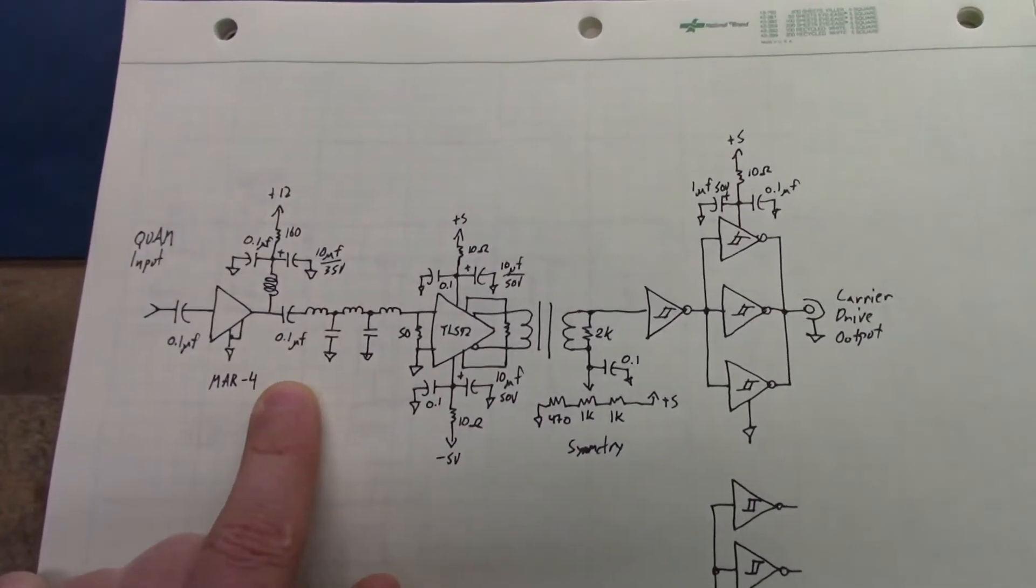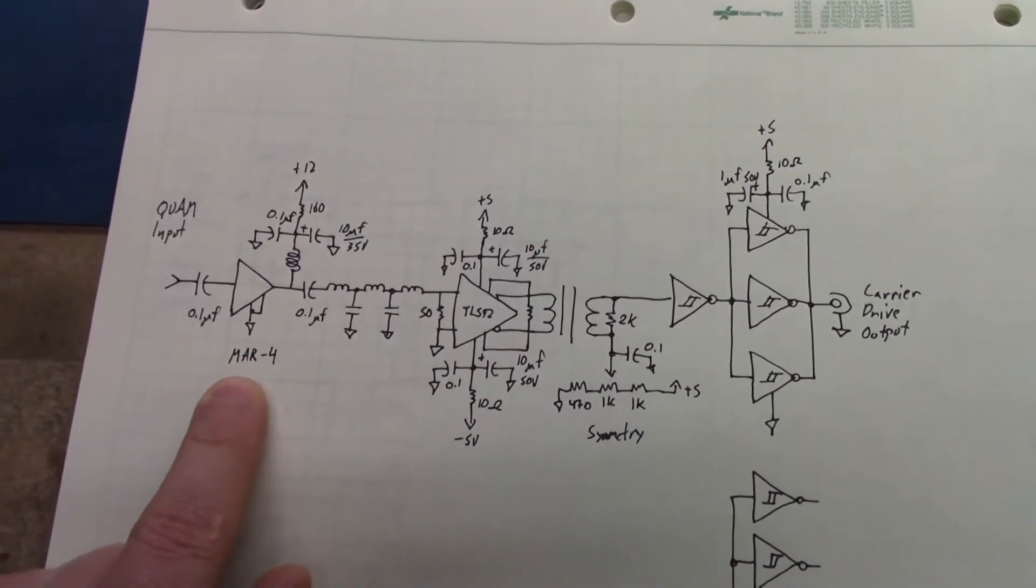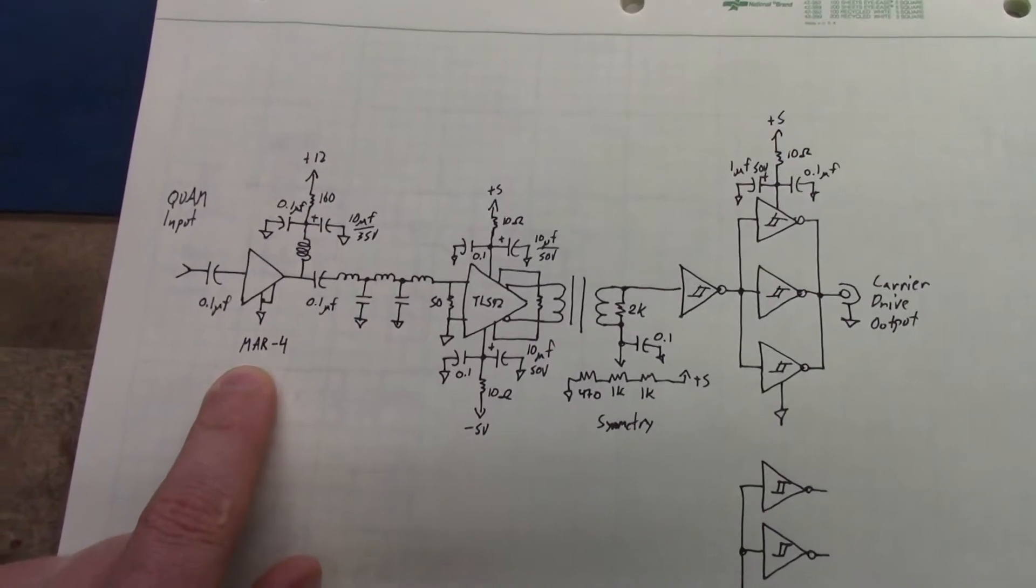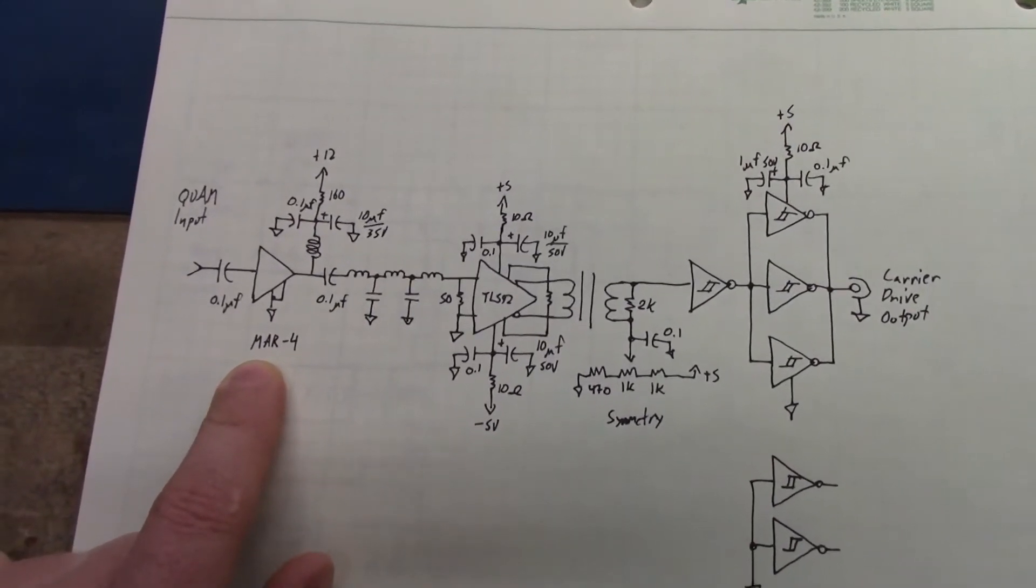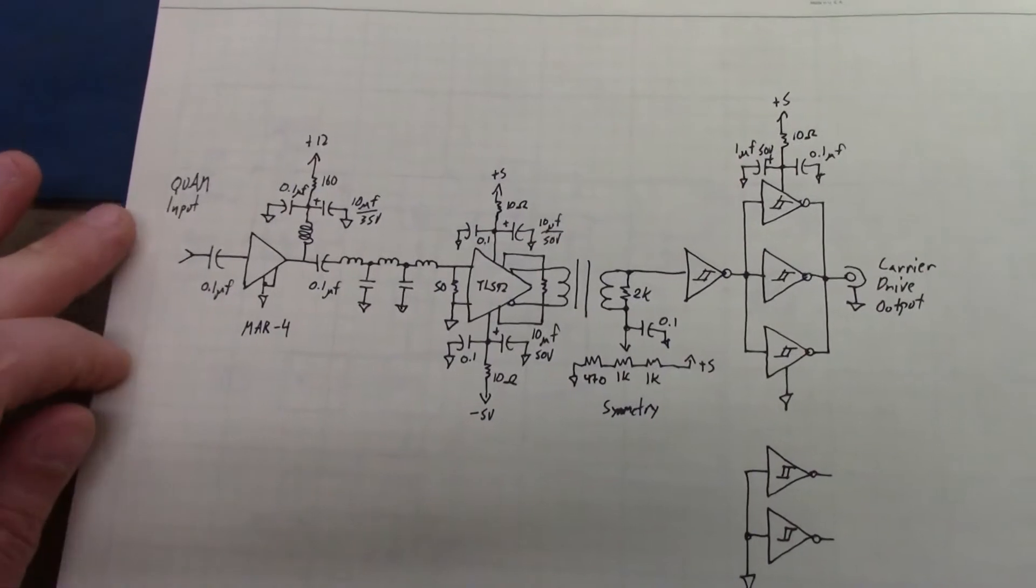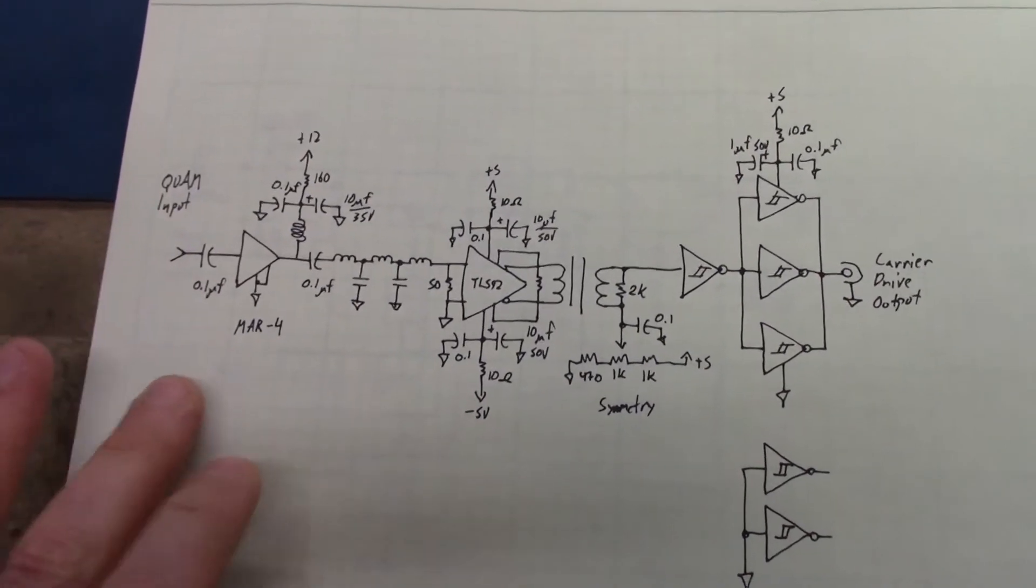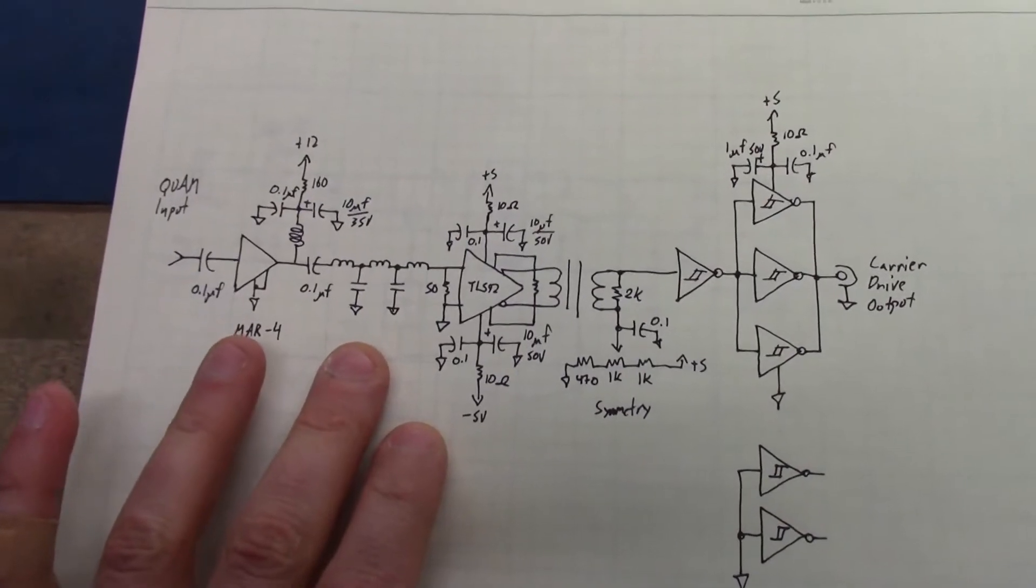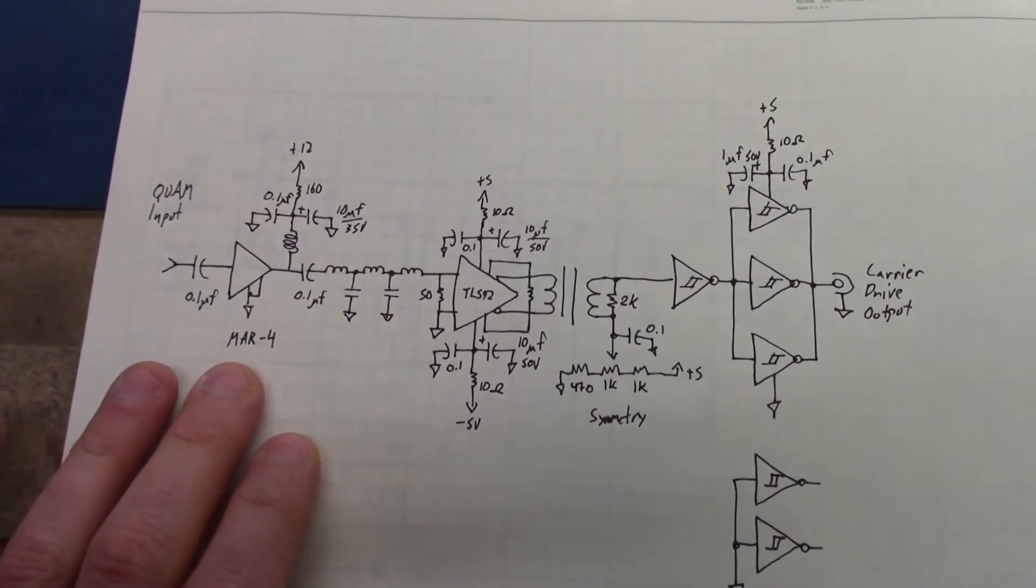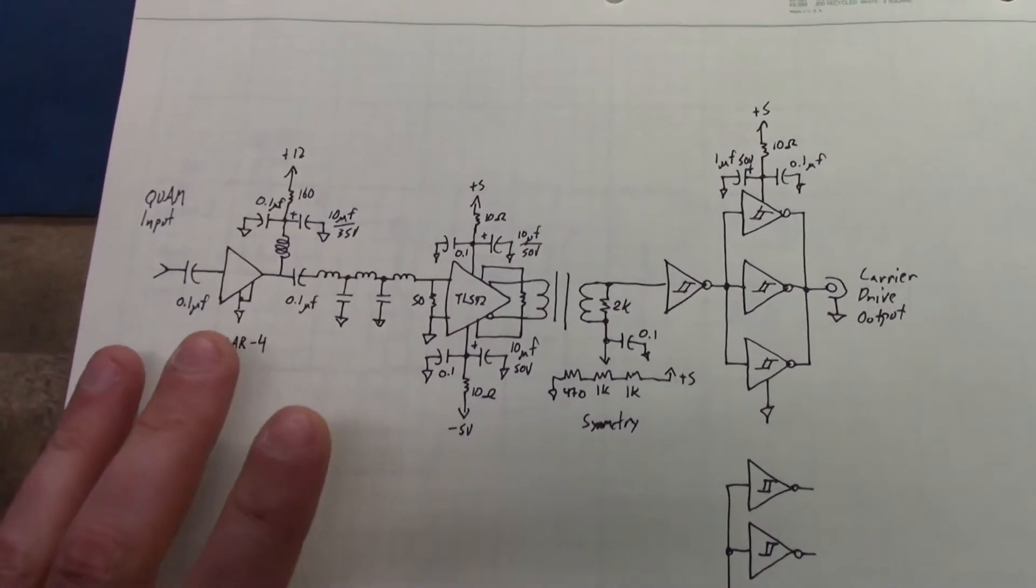This filter or this amplifier, this MAR4, is here to ensure that the QAM modulators, the two balanced mixers, and the power combiner see a consistent 50 ohm load regardless of what the filter is trying to do. That's the purpose of this amplifier.